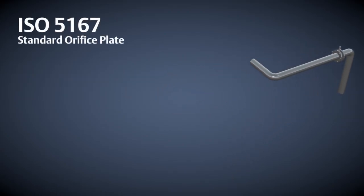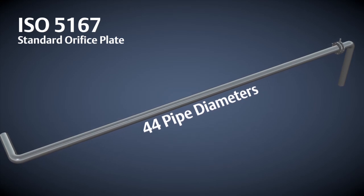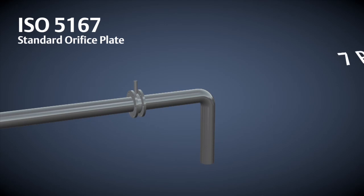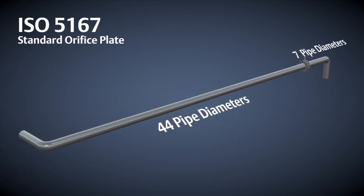International standard ISO 5167 requires 44 diameters of straight pipe run downstream after a 90 degree elbow and an additional 7 diameters downstream of the orifice plate. Often, that amount of straight run will not be available, especially in larger line sizes.